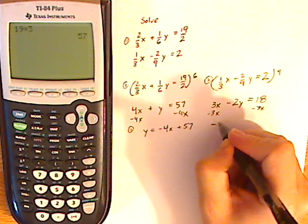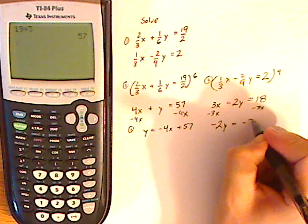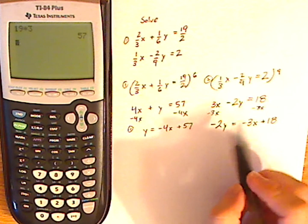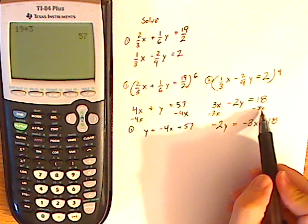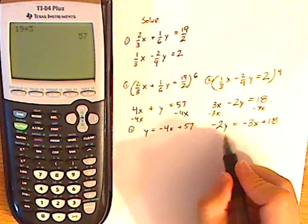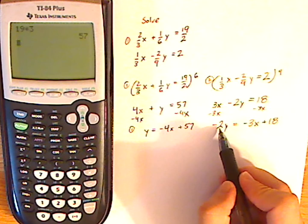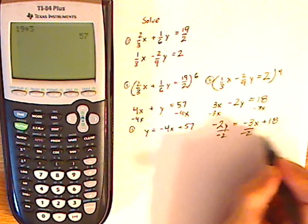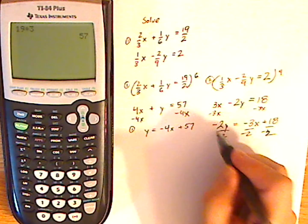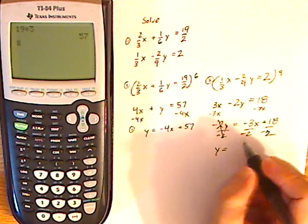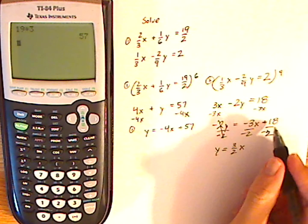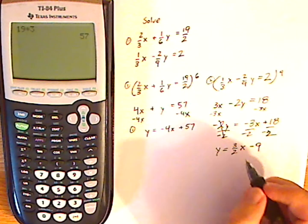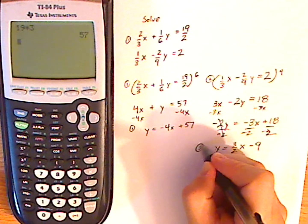So that gives me -2y = -3x + 18. Because -3x and 18 are not like terms, you're not going to combine them. Now I'm solving for y, so that means I'm going to divide everything by -2. So I divide everything by -2. Simplify, so that's y = 3/2x, 18 over -2 gives me -9, so it's minus 9. That's my second equation.